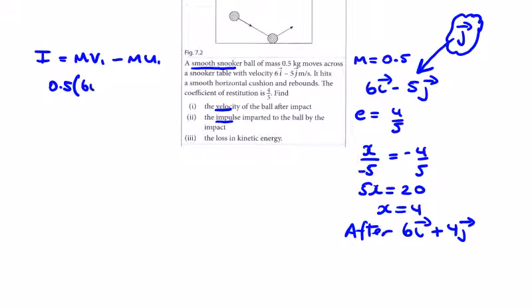The velocity after is 6i plus 4j minus 0.5 times the velocity before, which was 6i minus 5j. We get 3i plus 2j from the first bracket and minus 3i plus 2.5j from the second bracket.